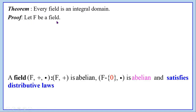The definition of a field is: suppose we take the ordered triplet, or the algebraic structure (f, +, ·). Then (f, +) is an abelian group, and (f \ {0}, ·) is abelian — that is, the given set is abelian with respect to multiplication.